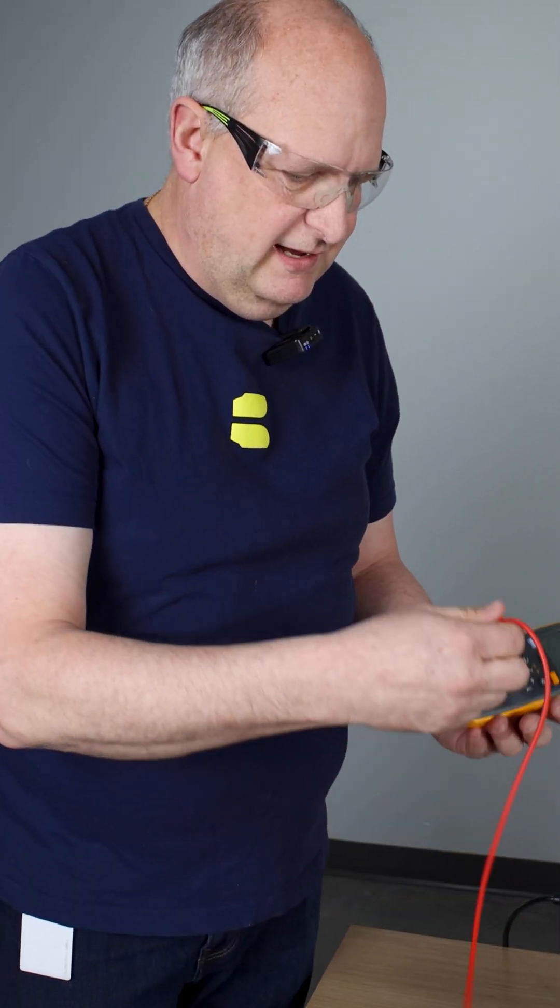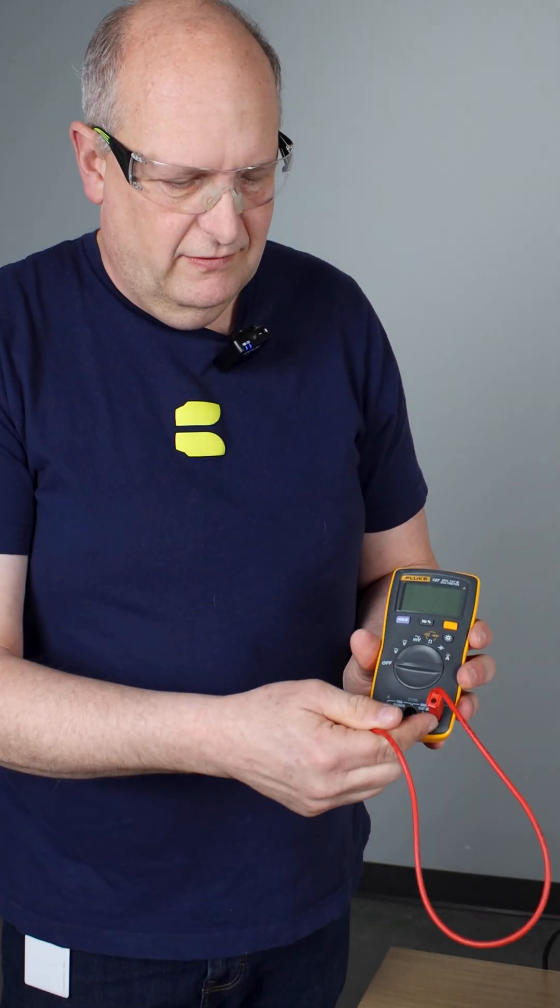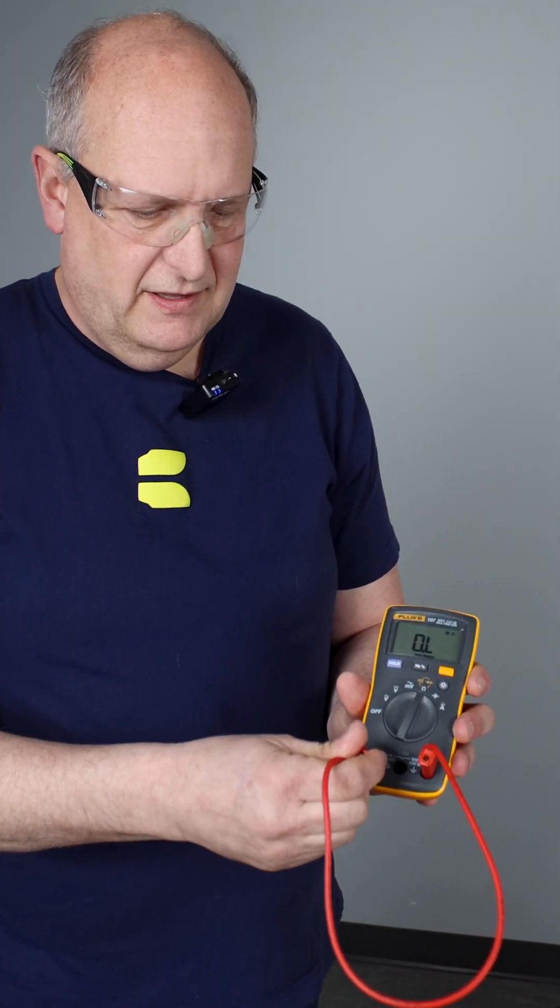A quick way of testing these meters is by taking your lead, putting it into the ohm scale, turning your meter to ohms, and then ohming out the internal fuse.